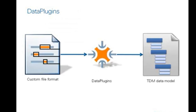Sometimes it's impossible to use the TDMS file format. For example, occasionally customer or supplier requirements dictate that you must use a particular file format for data storage, and certain traditional instruments automatically provide data output files using a custom format. Furthermore, legacy measurement data that has already been collected in a particular fashion cannot be recollected simply to store it in the TDMS file format. For this purpose, National Instruments has created a technology that you can use to provide a description of how to map any arbitrary custom file format onto the TDMS data model.